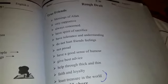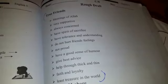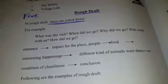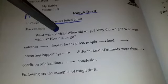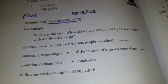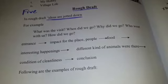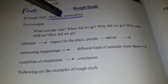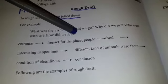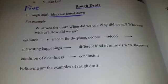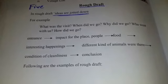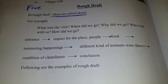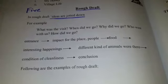Book page number 73 — 'True Friends' — that is the rough draft. First of all, what is the purpose of a rough draft? What we have to learn is that ideas are jotted down. For example, what was the visit? When did we go? These are the things that come to our mind, and then we can write points in the shape of points, just like we have written here.